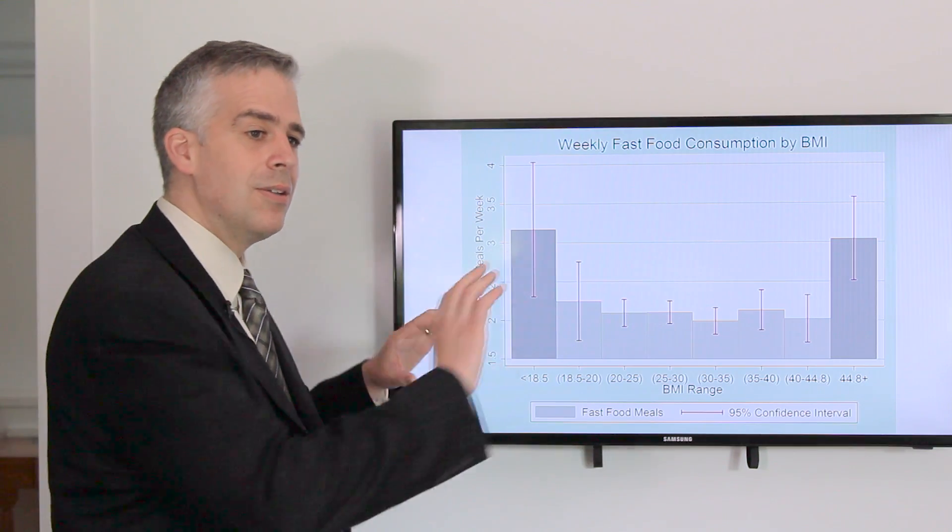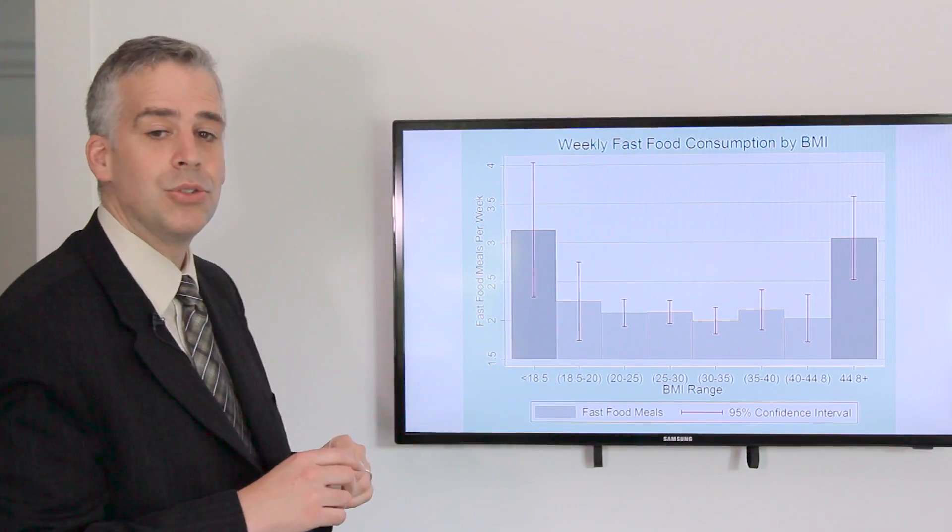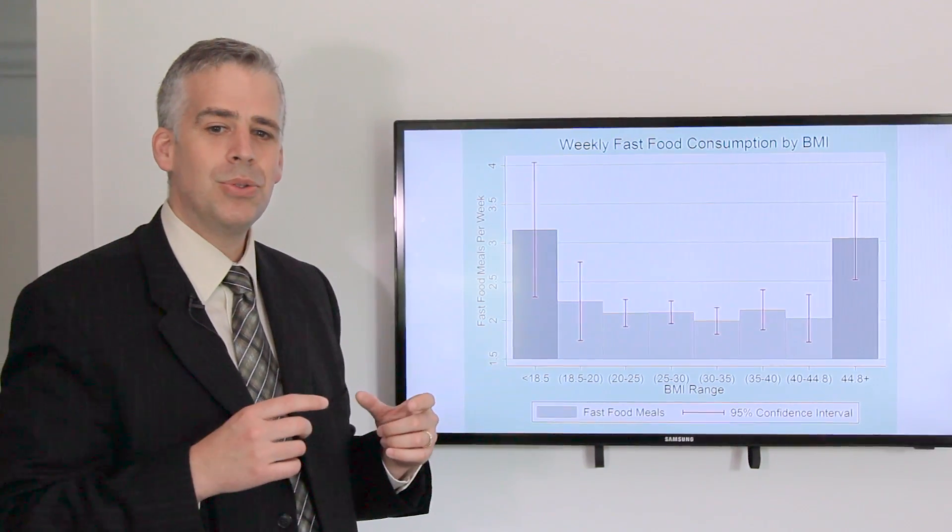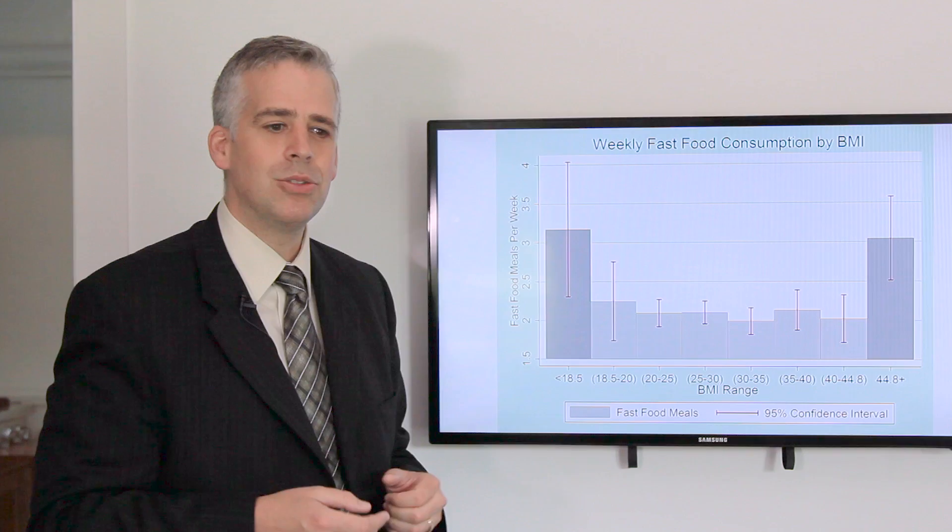Those who are consuming more are on the extremes—those above 310 pounds or below 125 pounds. Those who are extremely underweight or extremely overweight seem to be consuming too much.